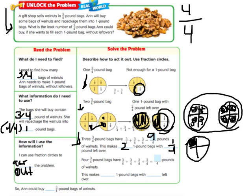So that can't be it because remember it says without leftovers. So let's try 4 bags. If we have 4 bags of 3/4 pound, we have 3/4 plus 3/4 plus 3/4 plus 3/4, which is 12/4.